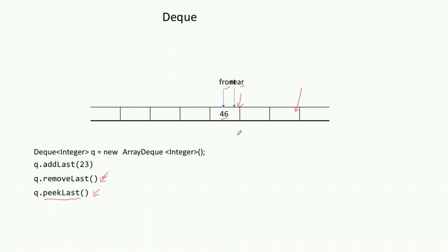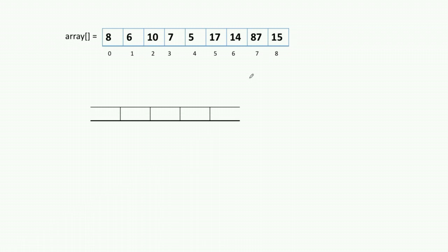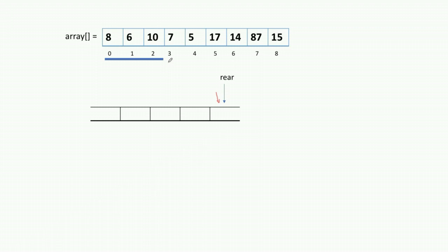To remove an element from the front end, we call q.removeFirst, which removes the element pointed to by front. So we can insert and delete from both the front and rear ends. Currently rear is pointing here — since the DQ is empty, front is also pointing to the same location. This is the first subarray we'll process, with window length k equal to 3.